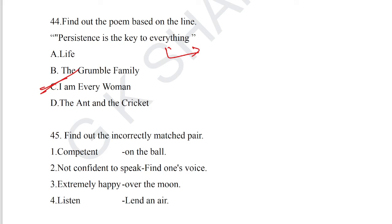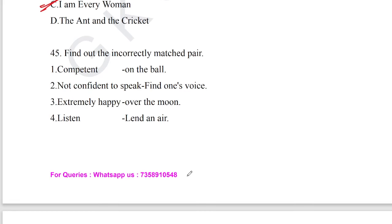Question number 44: find out the poem based on the line 'Persistence is the key to everything.' This proverb occurs in the poem 'I Am Every Woman.' Option C is the correct answer for question number 44.